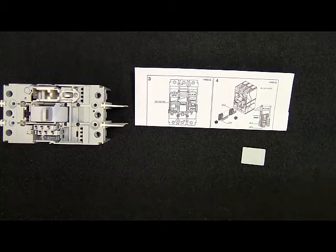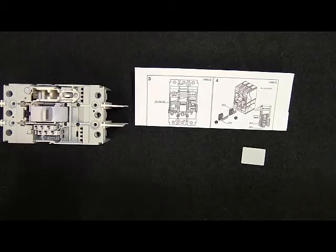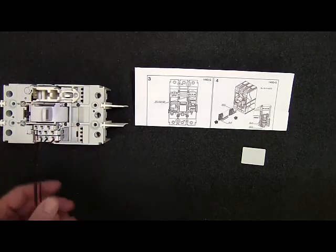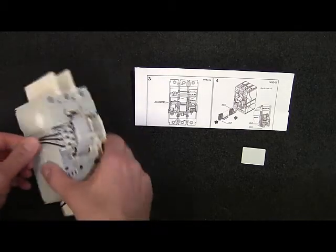Next, insert the auxiliary contact into the appropriate slot, pressing firmly to ensure full engagement. Then run the wires out to the side of the breaker.